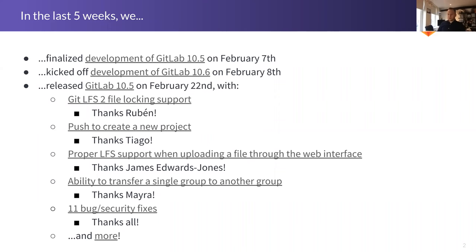Next: push to create a new project — a feature I'm probably unreasonably excited about. If you're starting a new project locally with your first couple of commits and you want to share it on GitLab, before you'd need to switch between your terminal and the browser to create the project. Now you can do it by just pushing to a non-existent project URL. If you're pushing to an existing namespace — your personal namespace or a group where you're a master or owner — we'll automatically create the project as a private project so you don't accidentally leak data. You can then switch it to public in the interface. Thanks Tiago who worked on that.